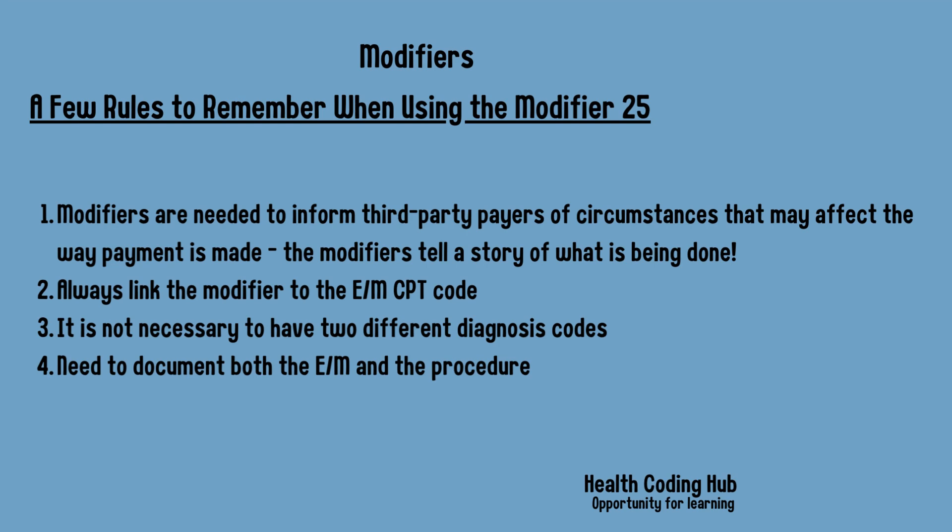Rule 3: It is not necessary to have two different diagnosis codes. Rule 4: You must document both the E&M and the procedure code. Whenever assigning modifier 25, ensure that in addition to the E&M CPT code, there is also another procedure CPT code — only then can modifier 25 be assigned with the E&M CPT code. These are the rules for when to use modifier 25.